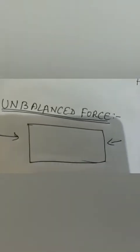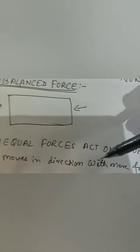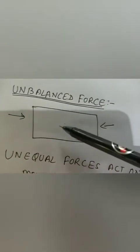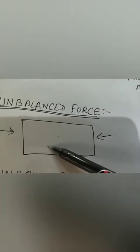But if there is movement, wherever more force is applied, the box will move in that direction. If the first boy applies more force than the second, the box moves toward the first boy's direction. Such forces which result in movement are called unbalanced forces. In daily life, whenever we are pushing or pulling something, that is an unbalanced force.